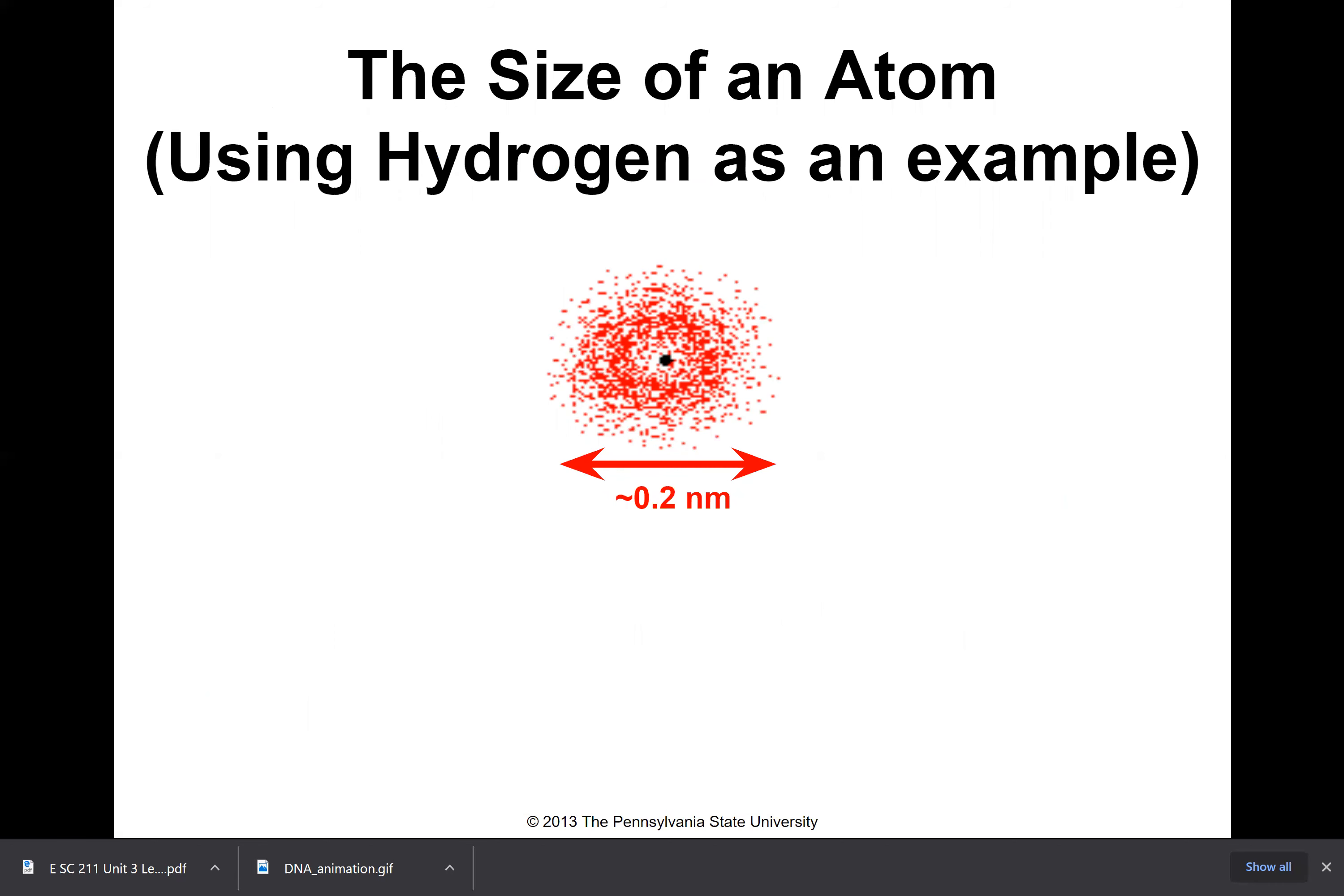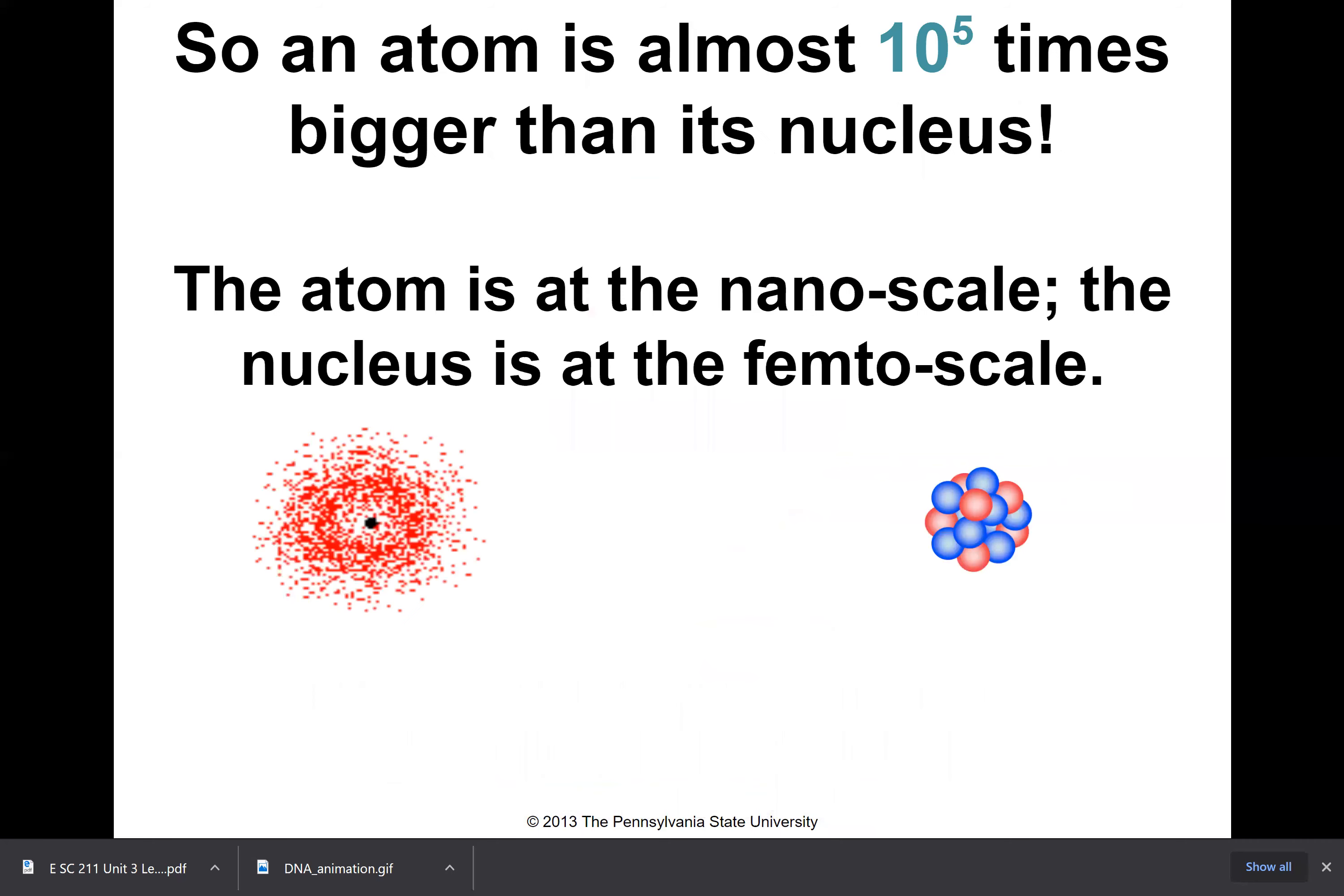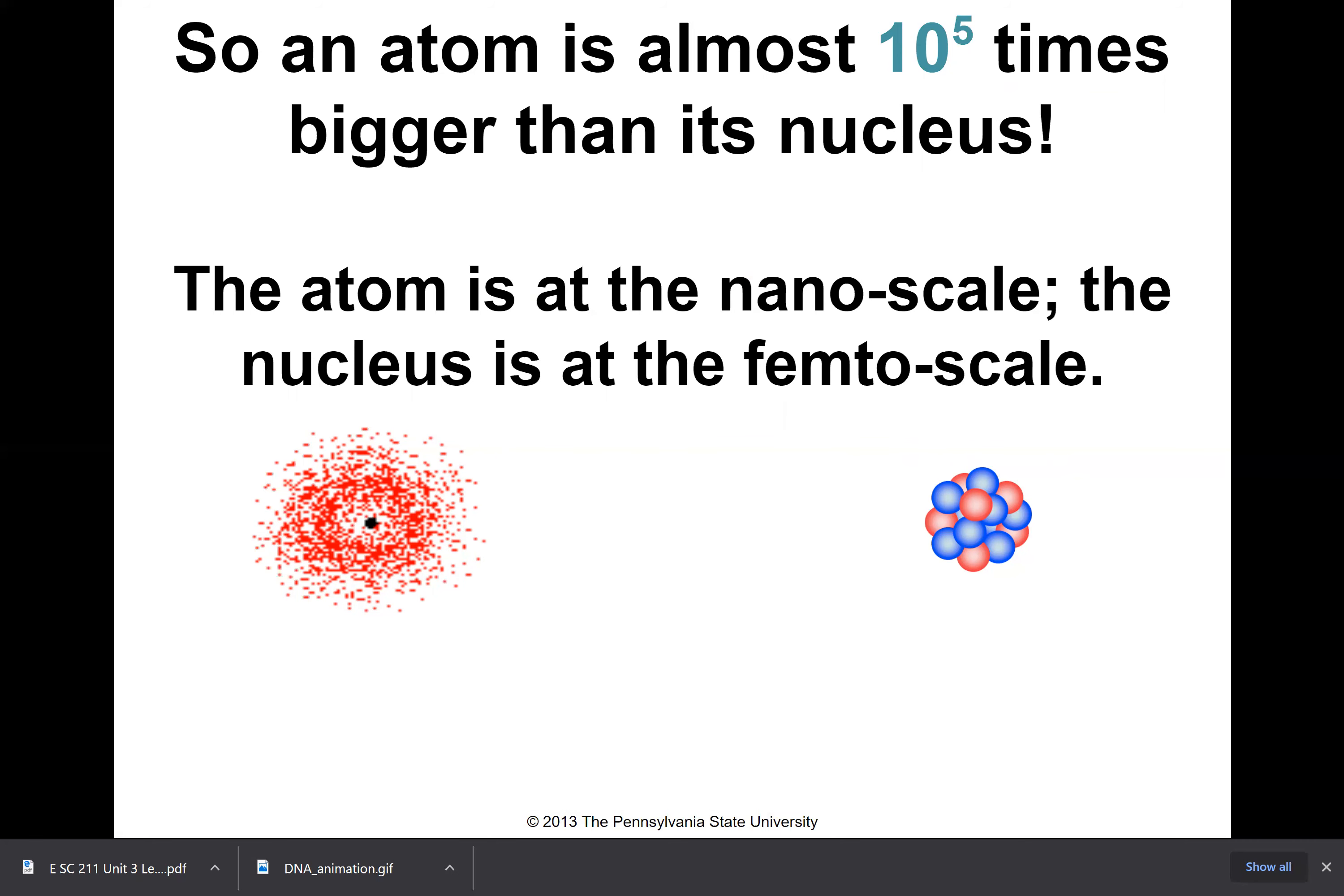Here's a picture showing the size of a hydrogen atom as an example, which is about 0.2 nanometers in diameter. The size of the nucleus of a lithium atom is 4.8 femtometers. Therefore, an atom is almost a hundred thousand times bigger than its nucleus. That's why if this were a hundred thousand times smaller than this diameter here, we wouldn't be able to see it at all. The atom is at the nanoscale, the nucleus at the femtoscale. We can see systematics in the chemical properties of the elements by ordering them by atomic number. This ordering is called the periodic table.